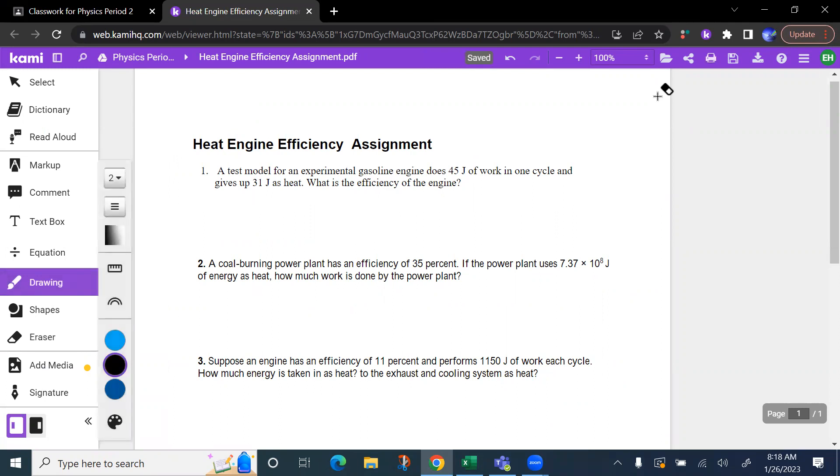The variables you're looking at are Qc, this is the heat leaving the heat engine to a cold temperature source. Qh, which is the heat coming in from a higher temperature source. And then E is the efficiency.